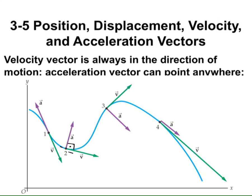The direction of velocity changes because the trajectory curves after that point. If there were no acceleration component in that direction, the object would continue in a straight line. At point 3, velocity and acceleration are again perpendicular — speed unchanged, direction changing. At point 4, the acceleration and velocity vectors are in the same direction, so the object's speed is increasing.